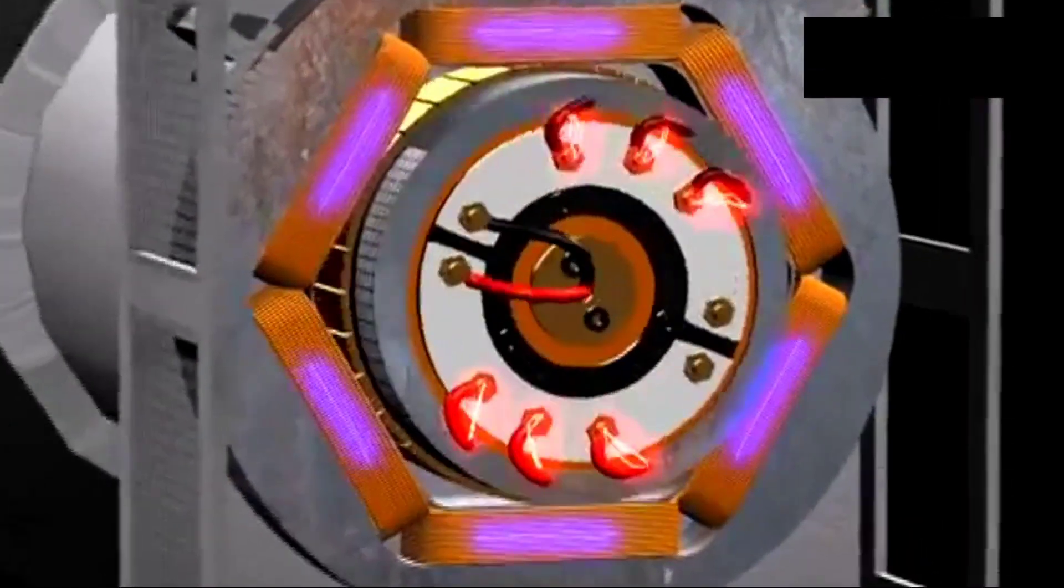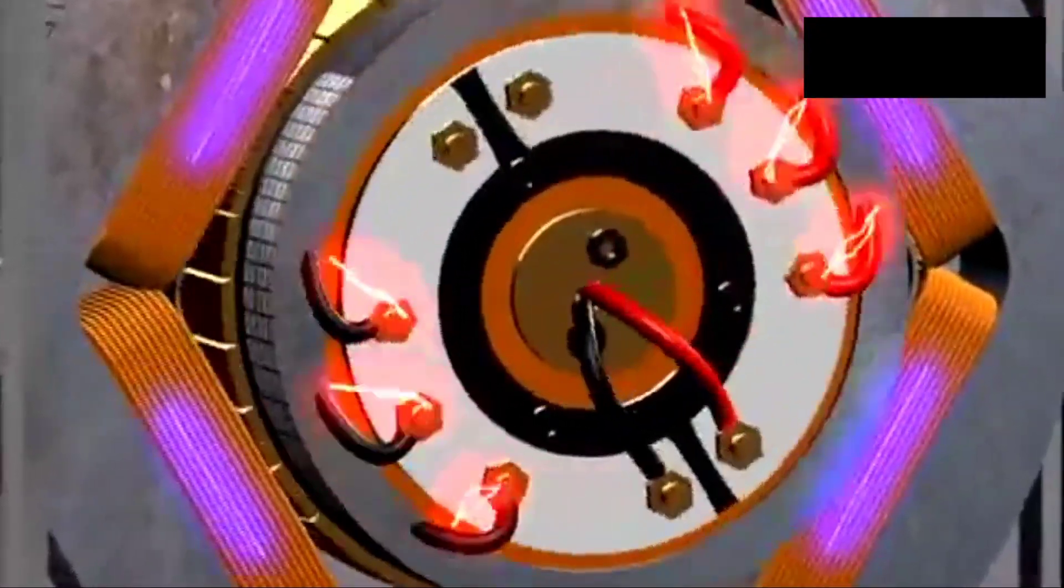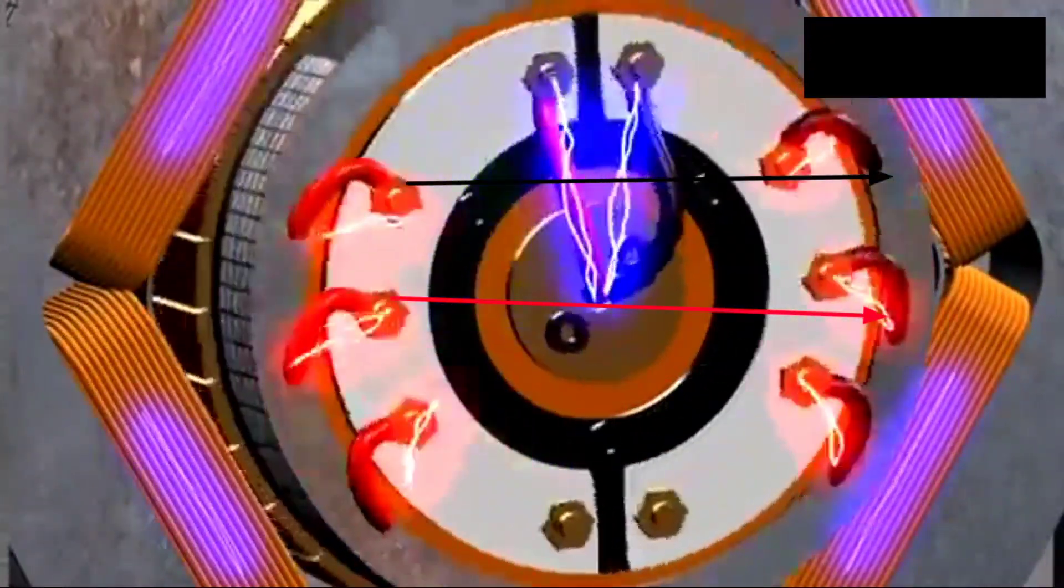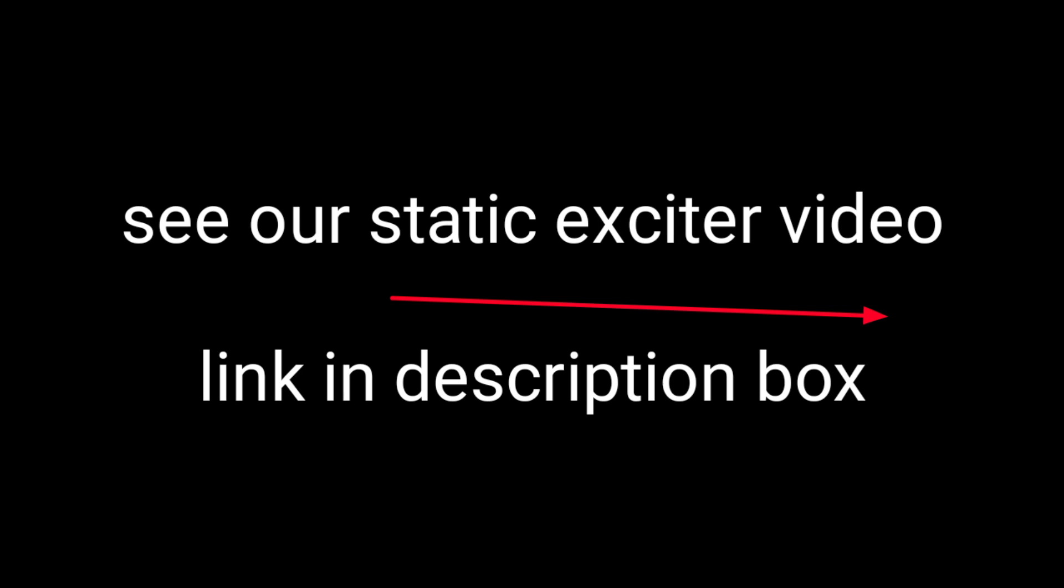This output is passed through a bridge rectifier and is converted to DC and given to the main rotor.